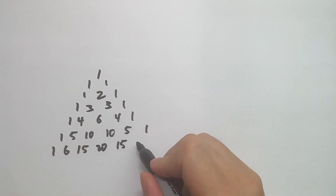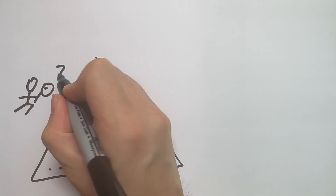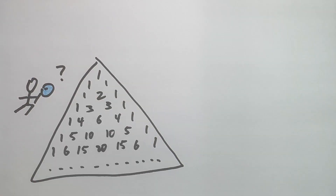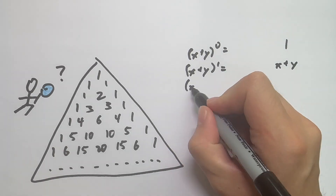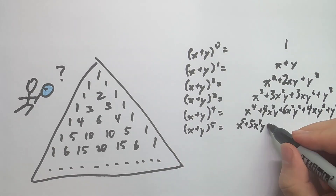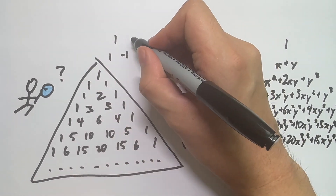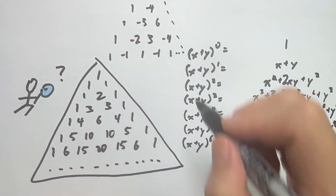Pascal's Triangle — the at first glance arbitrary setup that seems to hide thousands of mind-blowing facts. Why do the numbers magically pop up in algebra? And wait, it has an evil twin now?